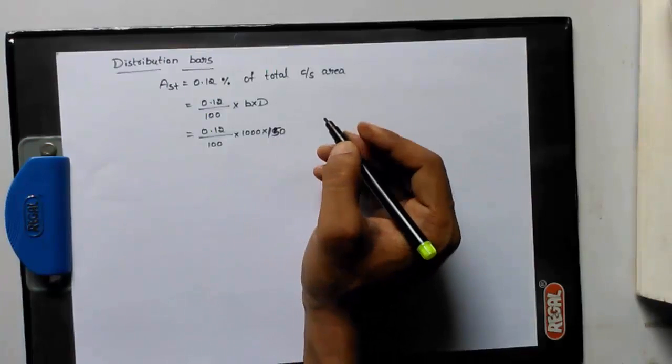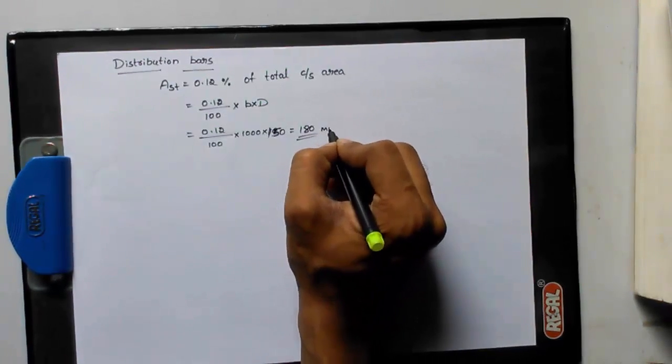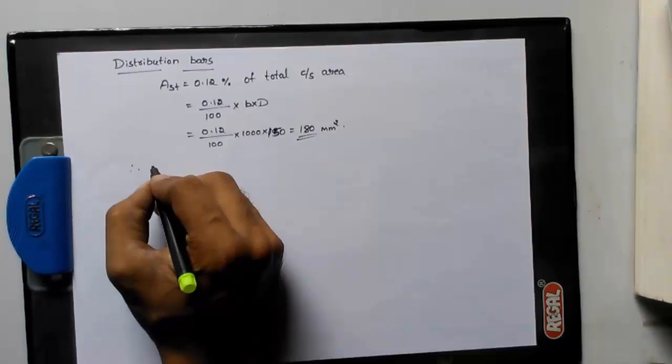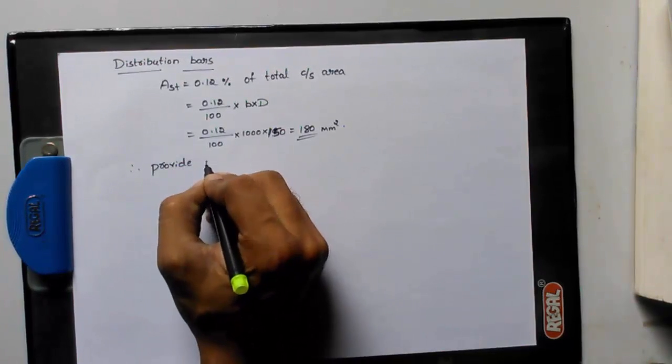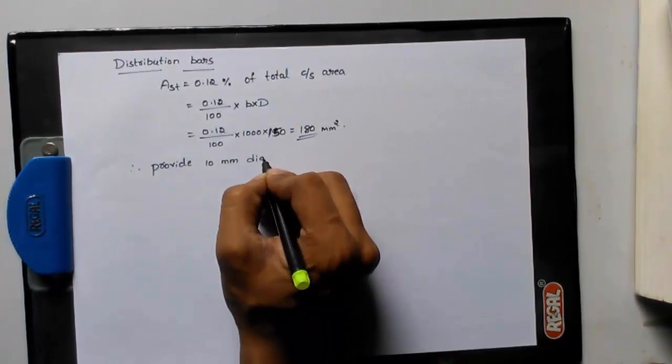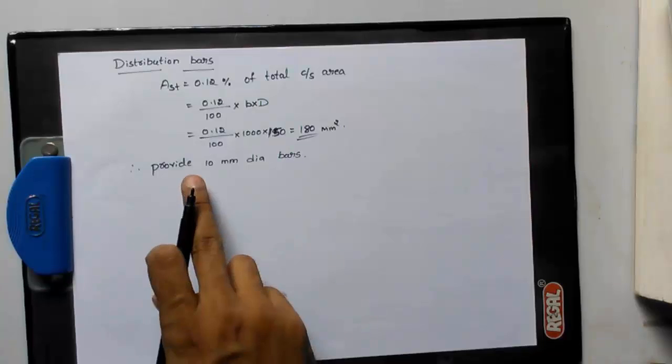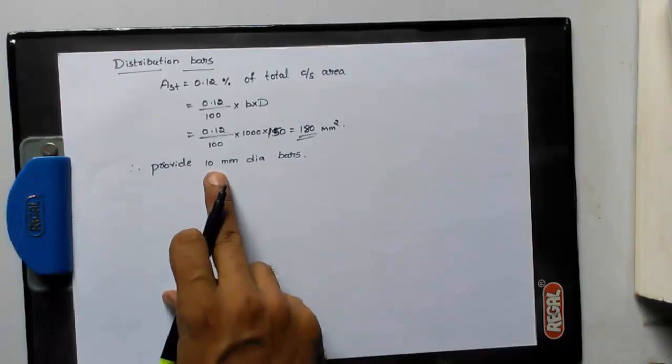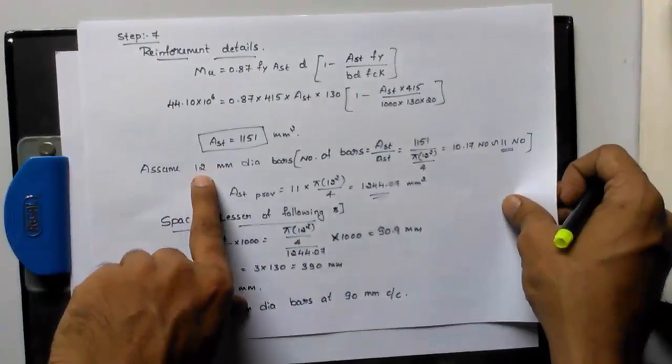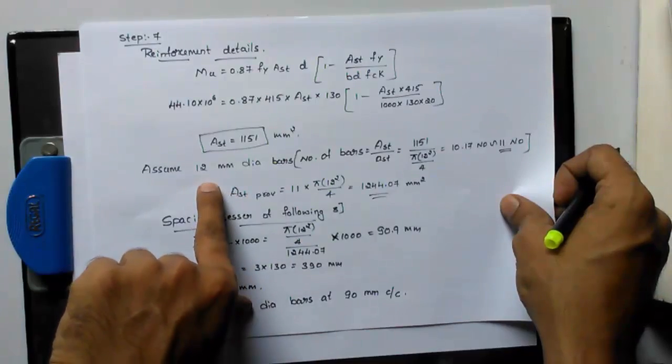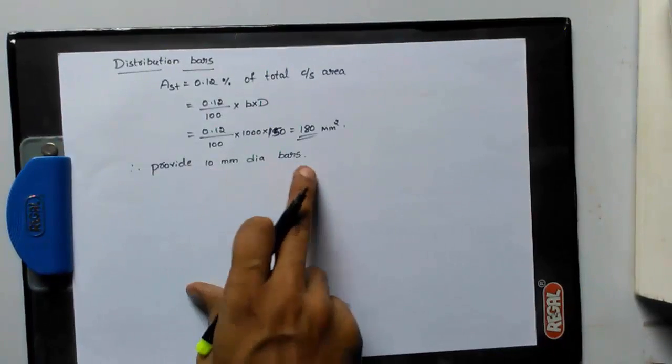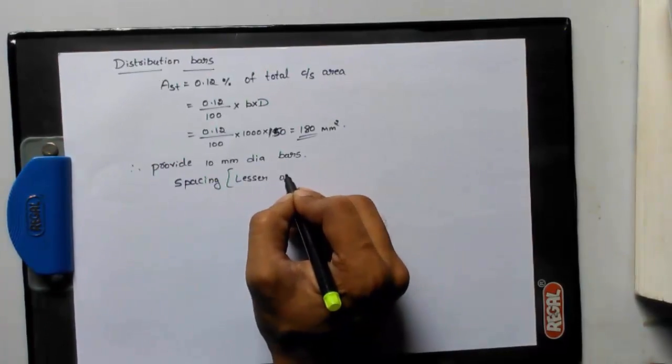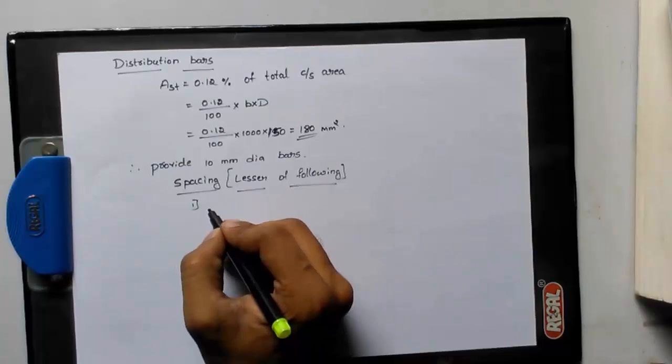Cross-sectional area of the beam is b into d, 0.12 by 100 into b is always 1000 into 150. You will get 180 mm square. So here we assume for distribution bars we assume 10 mm dia bars, so that is less than dia bar of the main reinforcement.